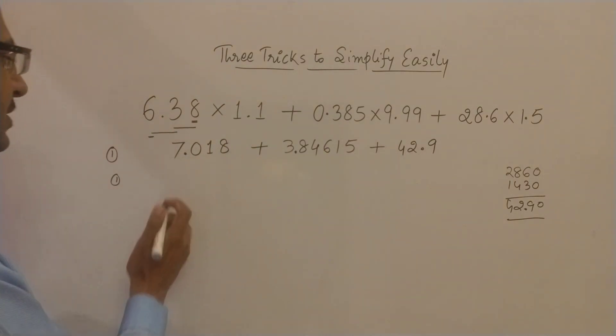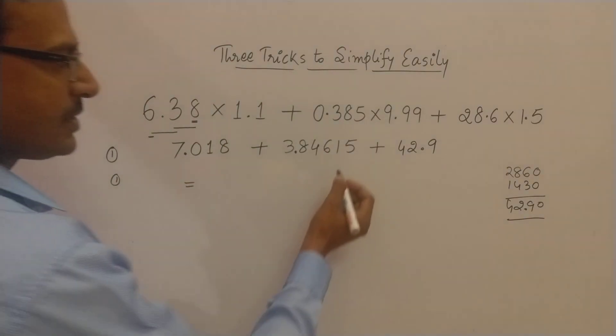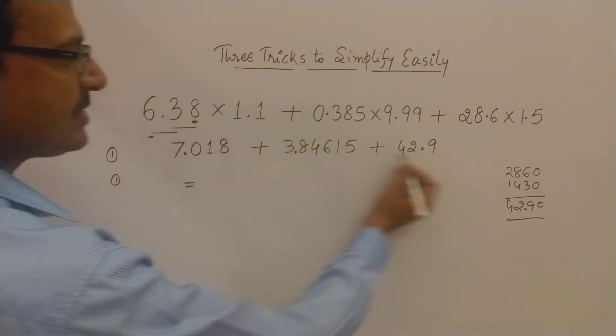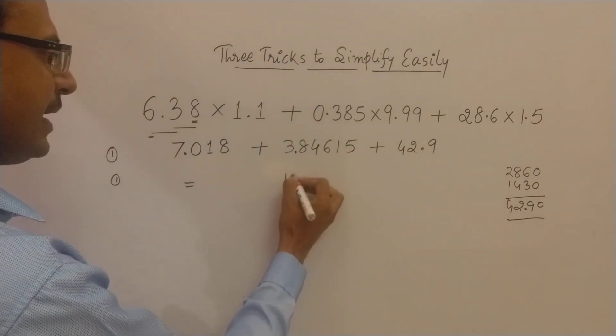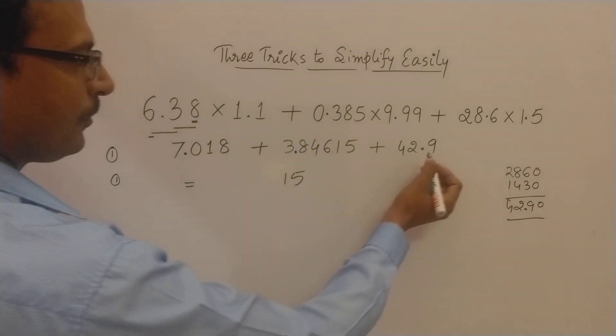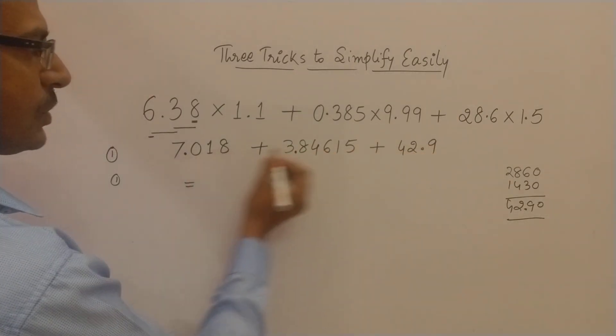Now all the 3 multiplications done very easily, and now you can add the numbers. So this has 3 decimal places: 1, 5. So the last 2 digits will come as it is. Now, third place.